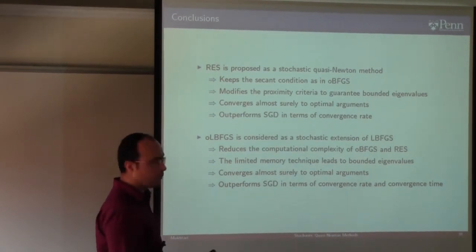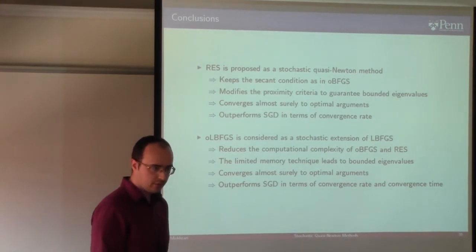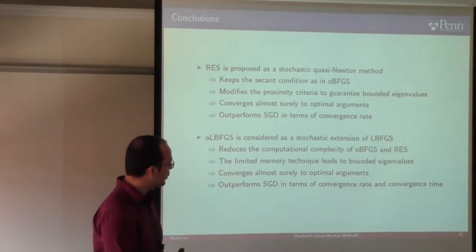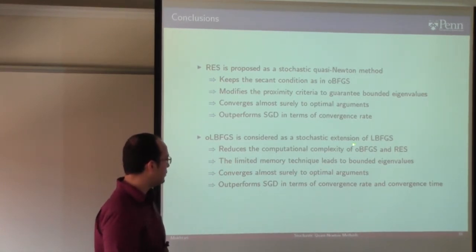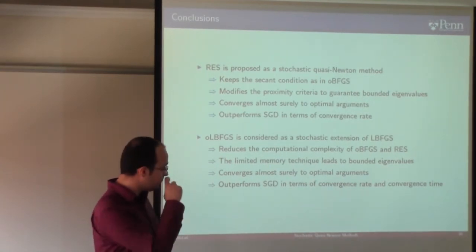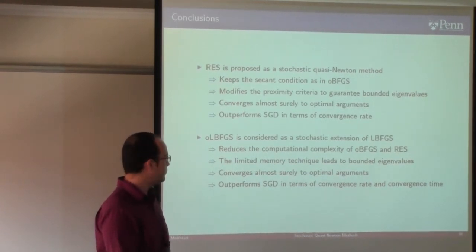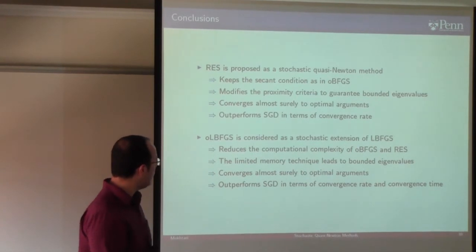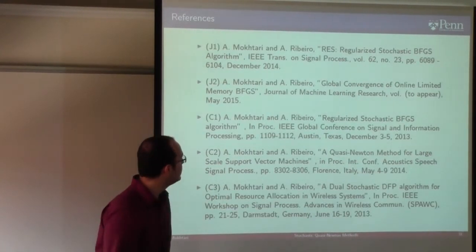To conclude: we proposed RES as a stochastic quasi-Newton method that maintains the secant condition, modifies the proximity criteria to ensure bounded eigenvalues, proves almost sure convergence, and outperforms SGD numerically. Since RES has high computational cost, we developed oLBFGS as a stochastic extension of LBFGS that reduces computation and storage complexity while maintaining the eigenvalue bounds needed for convergence. Almost sure convergence and sublinear 1/T convergence in expectation are both proven. oLBFGS outperforms SGD in both convergence time and convergence rate. Thanks for your time and attention.